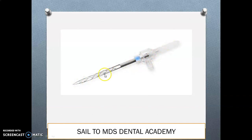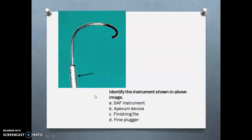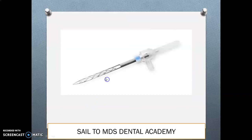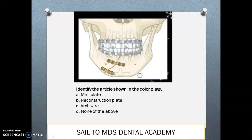This is your self-adjusting file, or SAF. To summarize: the Apexum device and the SAF device are two different instruments you need to be able to identify from images.